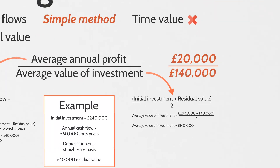Returning to the main formula, we now have £20,000 divided by £140,000, which gives us 0.1429 — rounded to one decimal place, that's a 14.3% return. So for every pound that we invest in this project, we'll see a 14.3% return — 14.3 pence back from every £1 we invest. It sounds like a good idea.